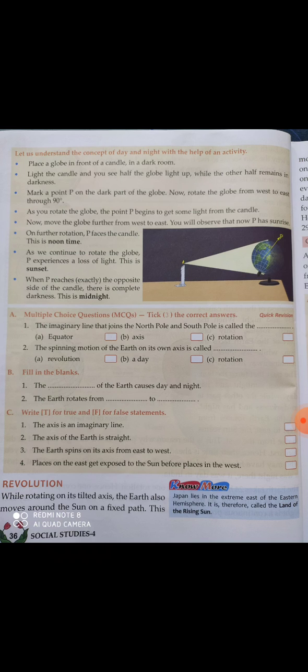This is called revolution. The earth revolves around the sun on a fixed path — it has never moved away from that path. It is always in its own fixed orbit around the sun.